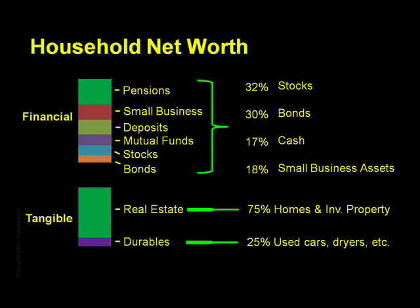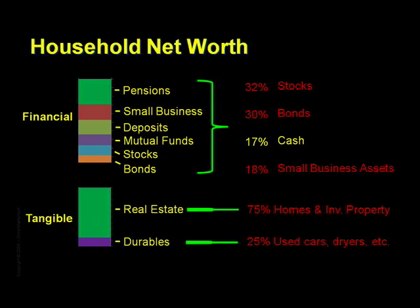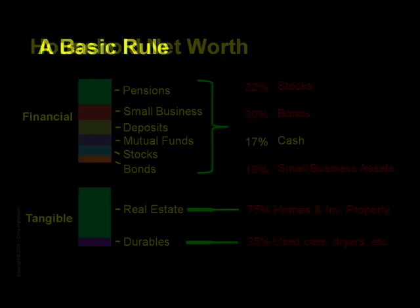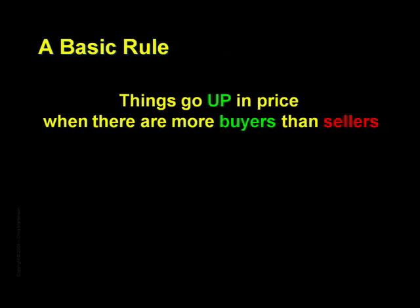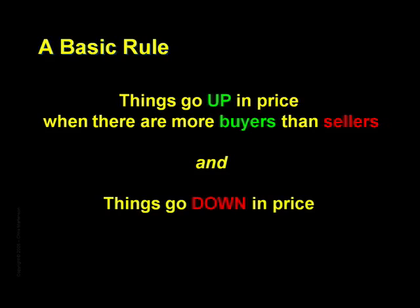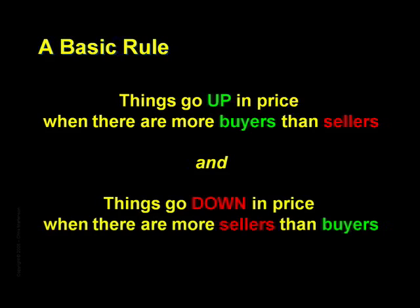For every single one of all of these assets — except cash — in order to liberate the wealth from these assets, you'd have to sell them first. One general rule of asset markets goes like this: things go up in price when there are more buyers than sellers, and things go down in price when there are more sellers than buyers. Hold on to that thought for when we get to demographics.